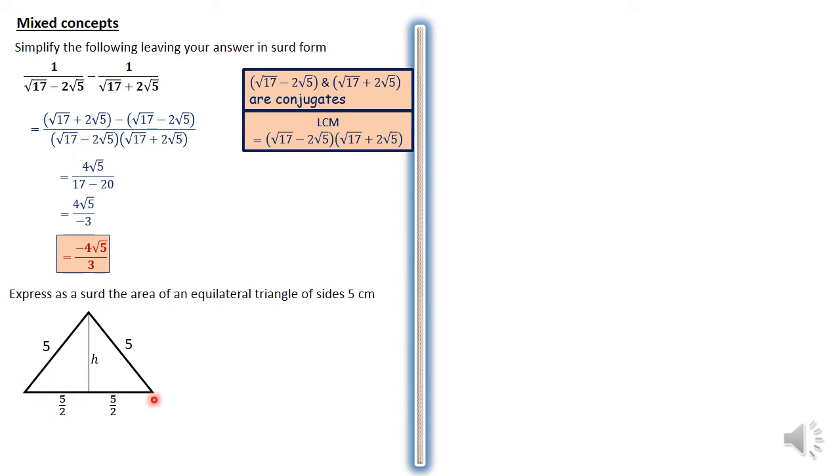All of it is 5, but half of it will be 5 over 2. So 5 over 2 plus 5 over 2 will be another 5. And we have a perpendicular height represented by letter H, that one there. Now using Pythagoras theorem, we can say that H squared plus 5 over 2 squared should be equal to 5 squared, which is what we have here.